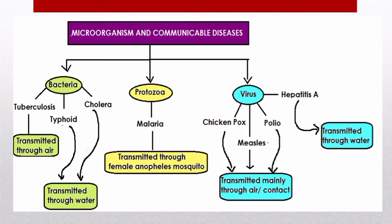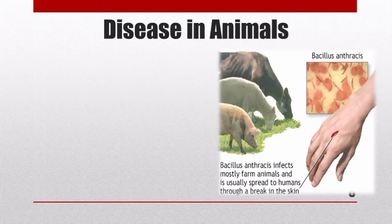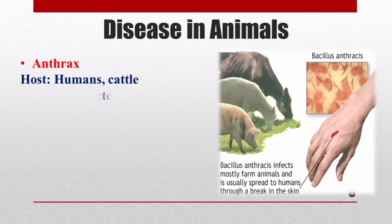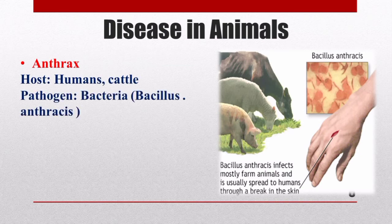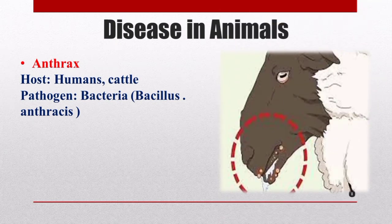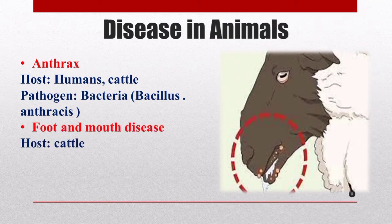Microorganisms also cause diseases in animals. For example, anthrax is a dangerous cattle disease that can also be transmitted to humans through a break or wound in the skin. Anthrax is caused by the bacterium Bacillus anthracis. Another common animal disease, foot and mouth disease, is caused by a virus.